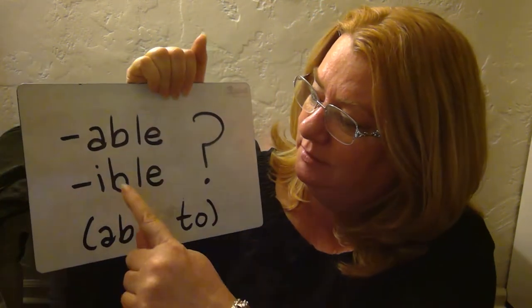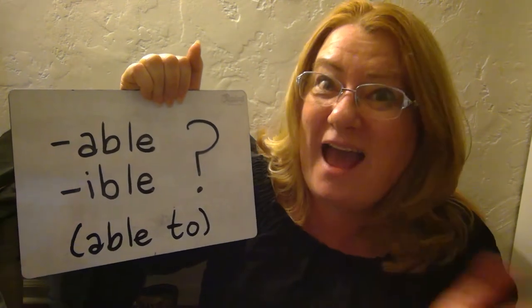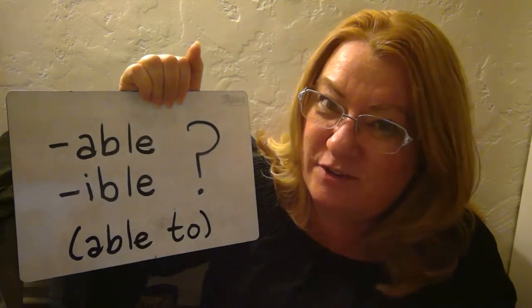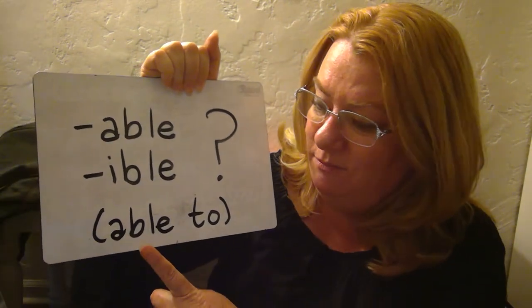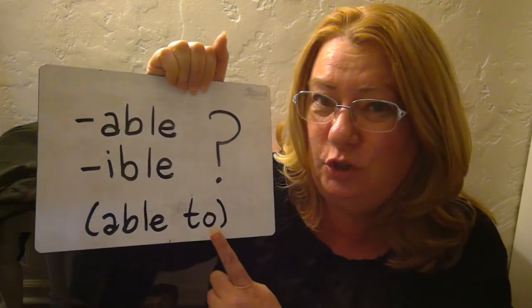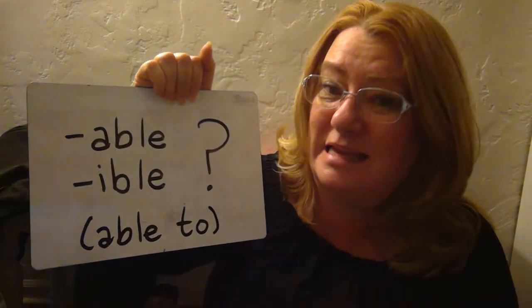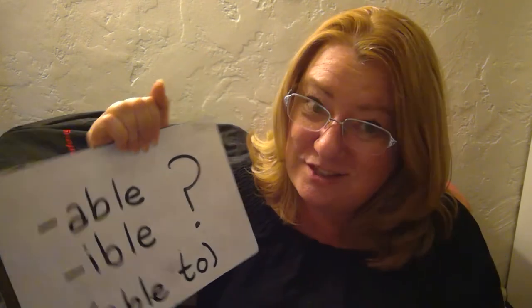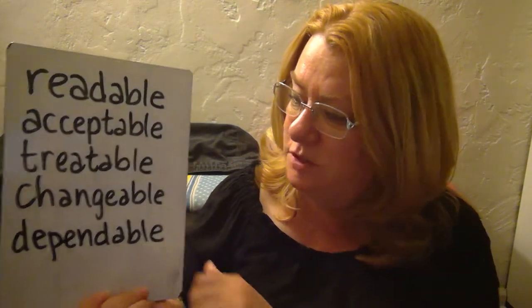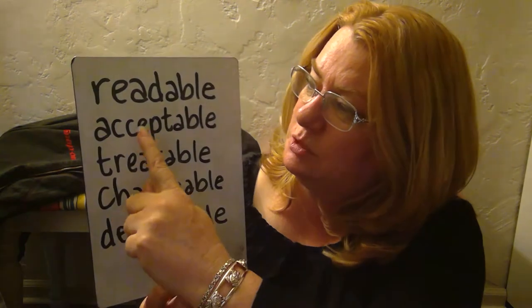I've got -able and -ible. How do you know the difference in when to use them? Because they both come with the meaning of 'able to' when you add them as a suffix to words. Let's look at this interesting thing, because you can memorize rules all you want, but sometimes it's kind of hard.